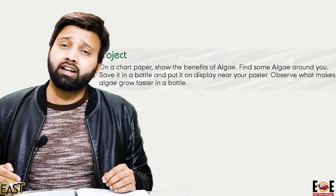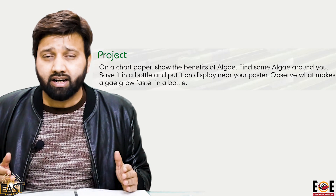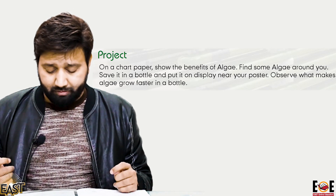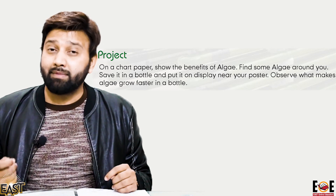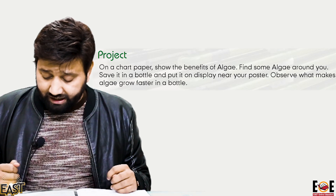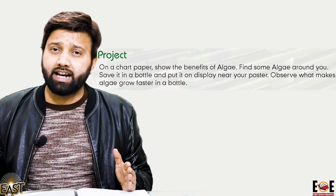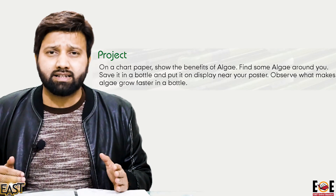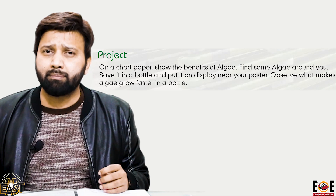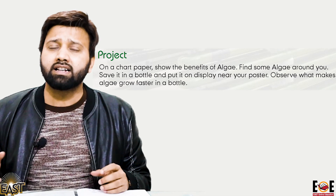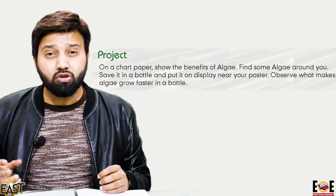We need to prepare our materials. We need chart paper, we need a pen, and we need a little algae. The algae we have to collect in our lab is called algae, which is also called kai.